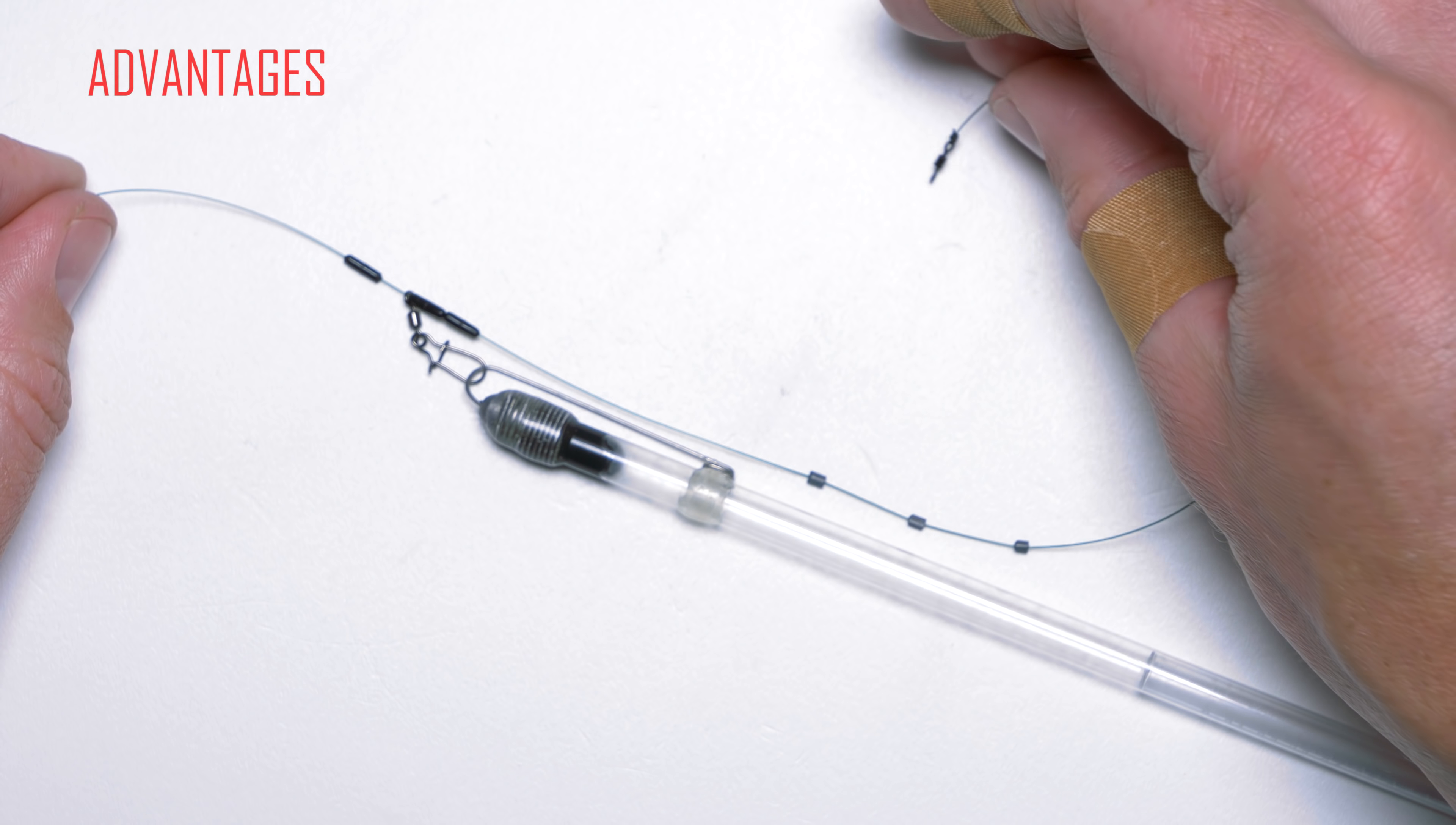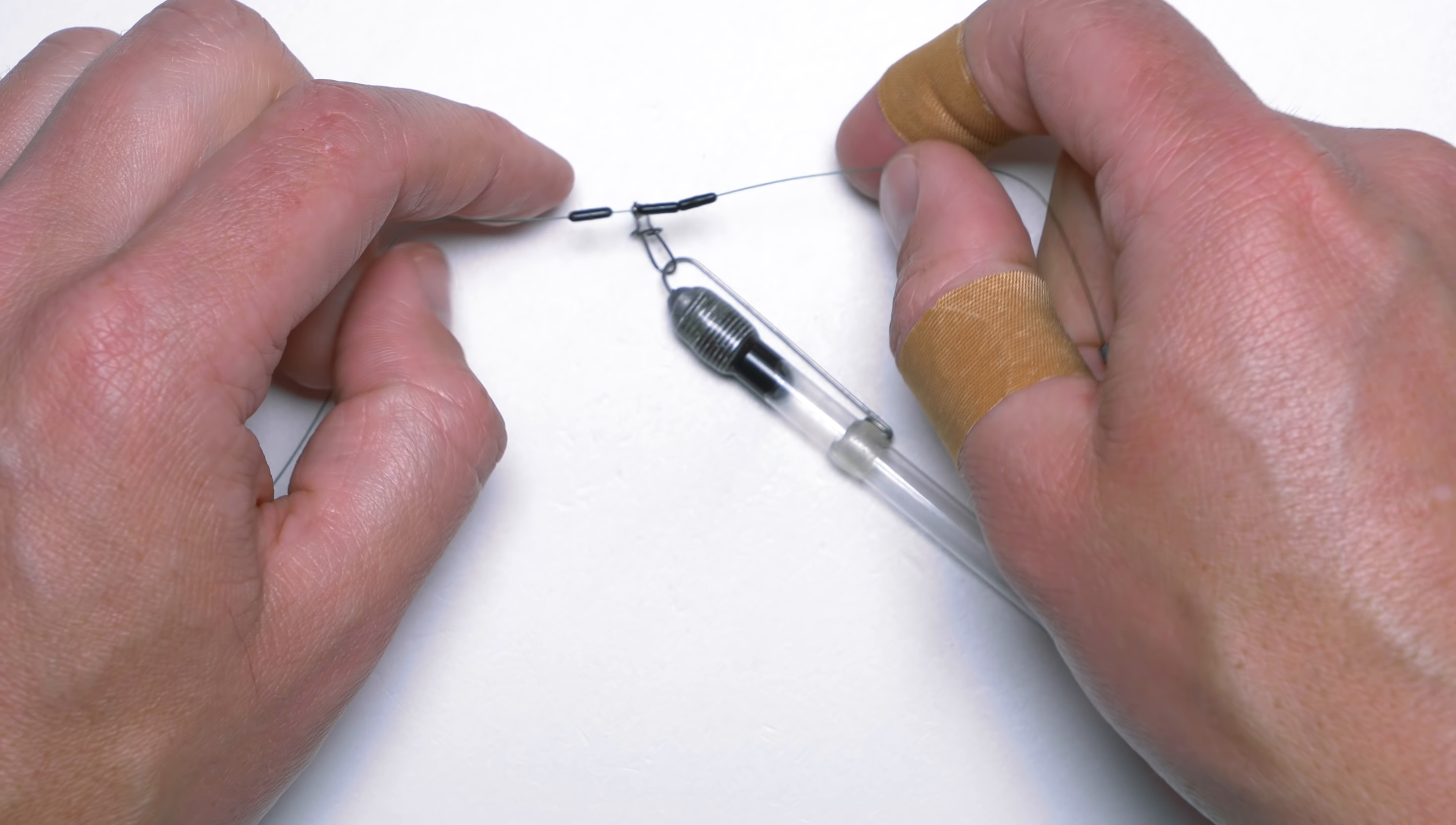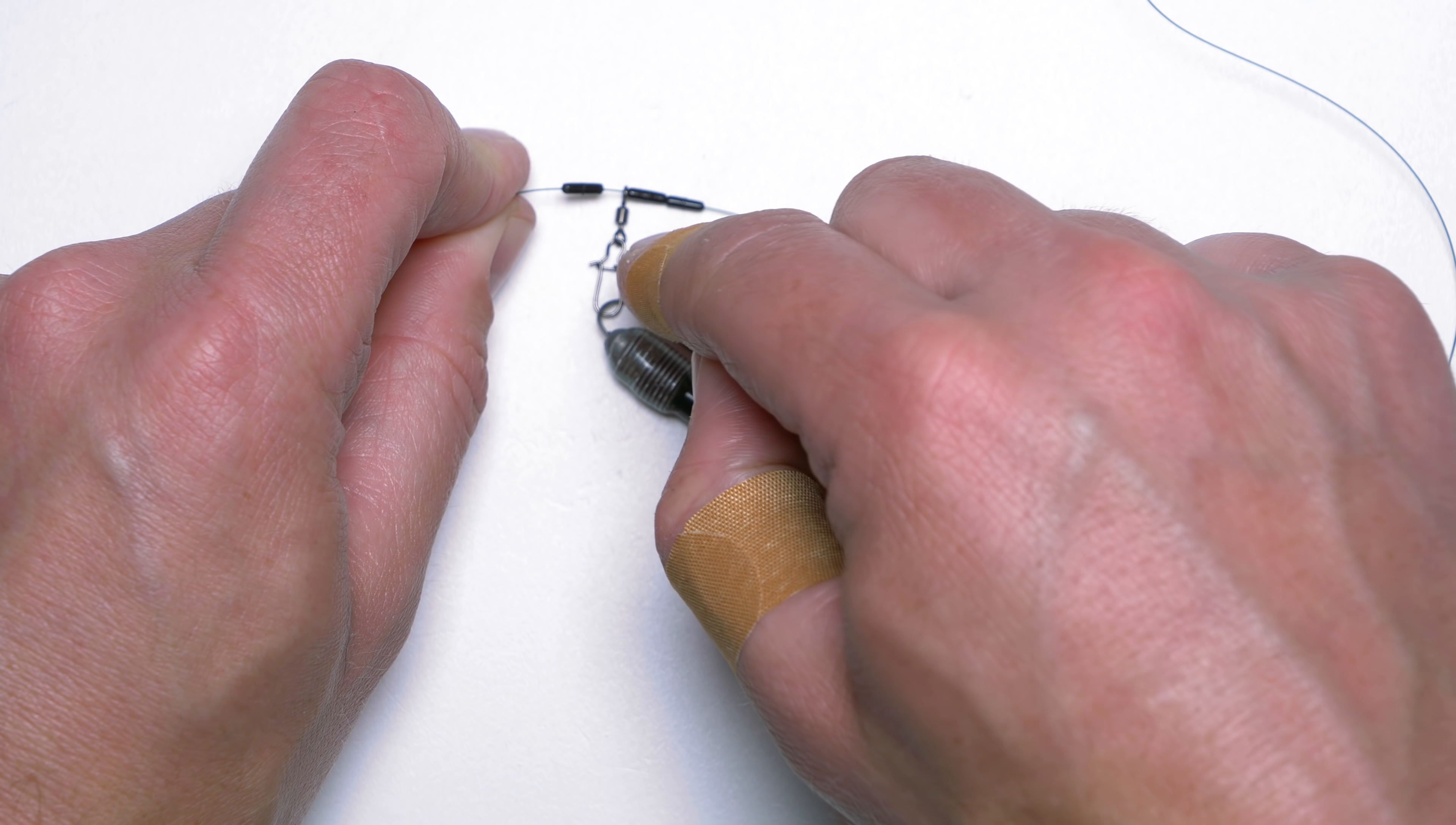The advantages of this rig are very simple. Let's begin with the part where wagler float is attached onto the line. So we have the attachment by using float stops. So it means that the position of the float can be changed very easily without damaging the line at all. Also as we have a couple of float stops it means that on the cast the float won't move. If your float stops not as grippy as you would like you can put three of them, four of them and you will see that at some point your float will be properly fixed onto the line.